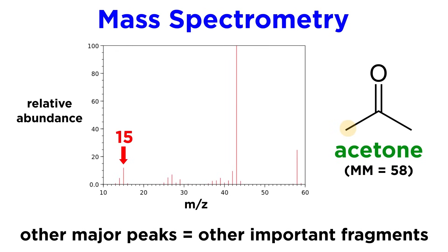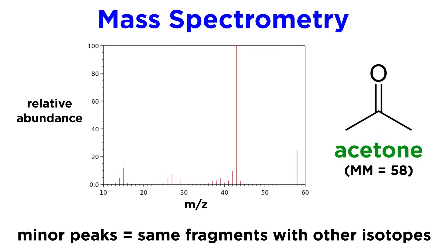The last major peak occurs at 15, and given what we just said about methyl groups, this is also easy to identify as the methyl group itself. And as we said, the rest of the small peaks will typically correspond to variations of the major fragments involving different isotopes, which explains their very low abundance.